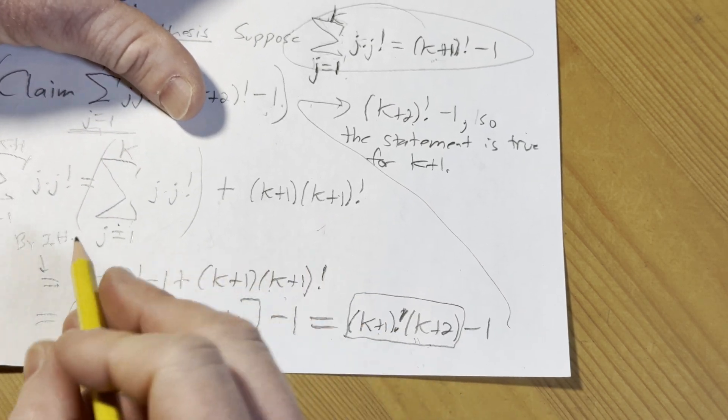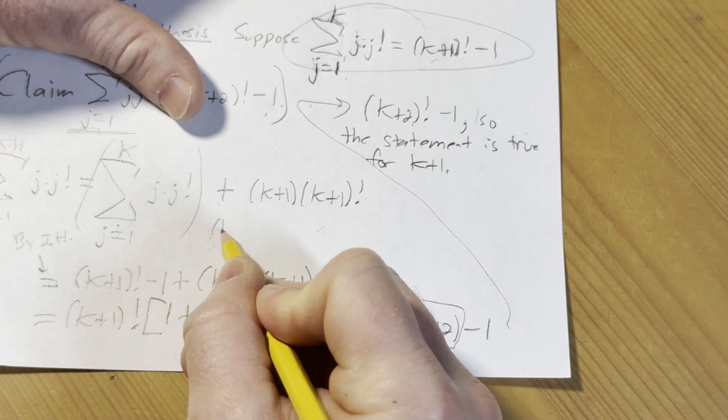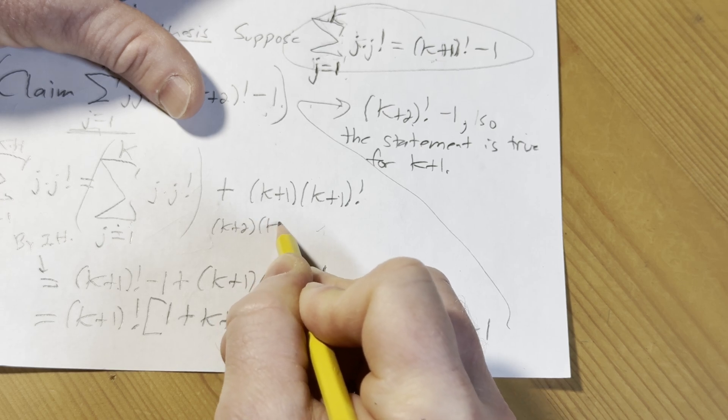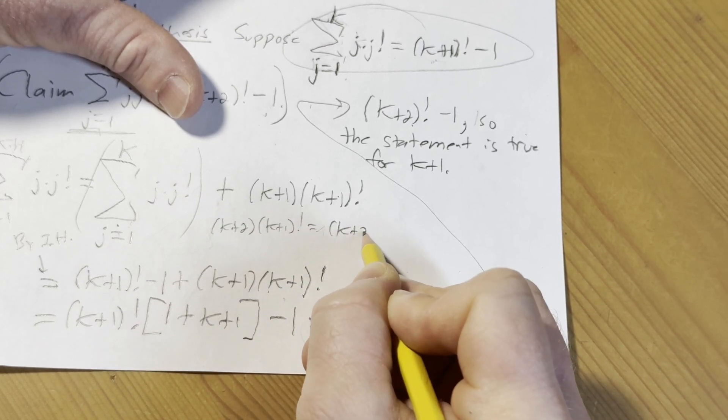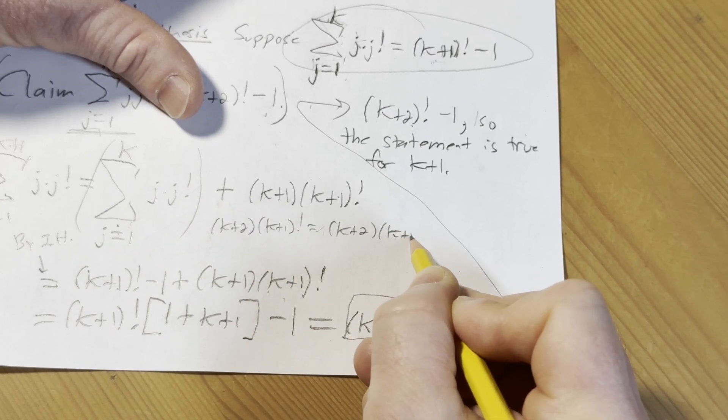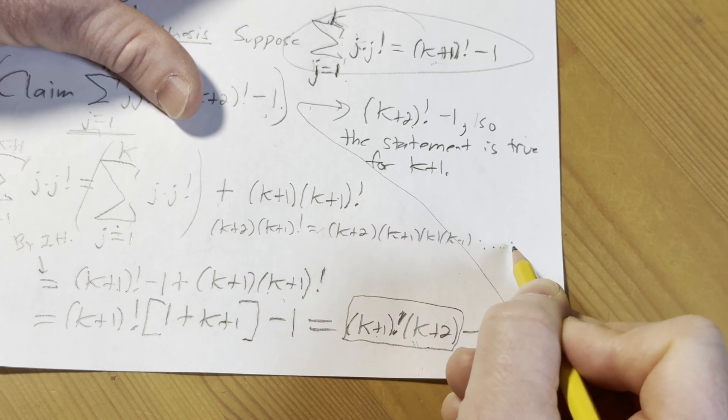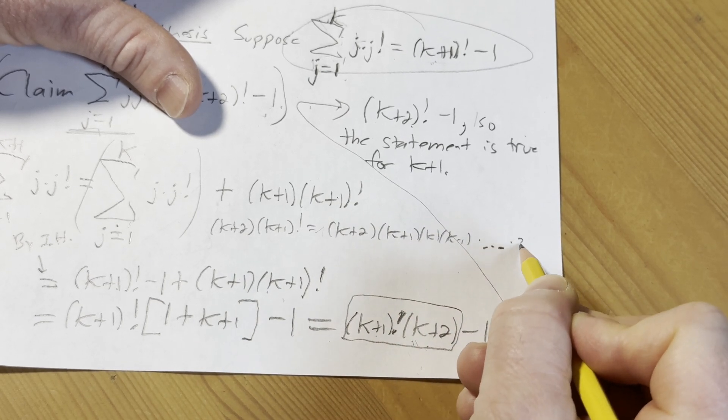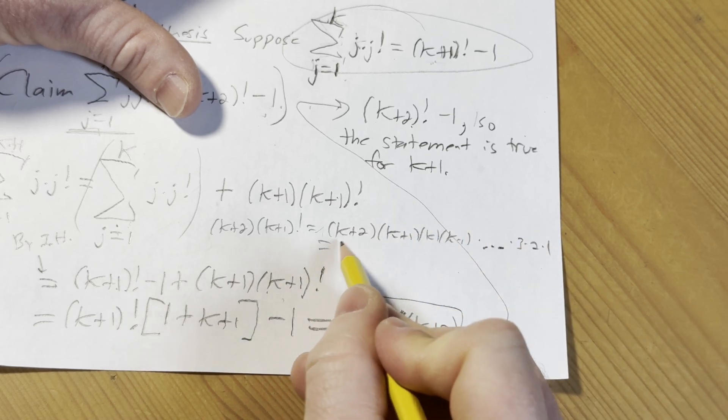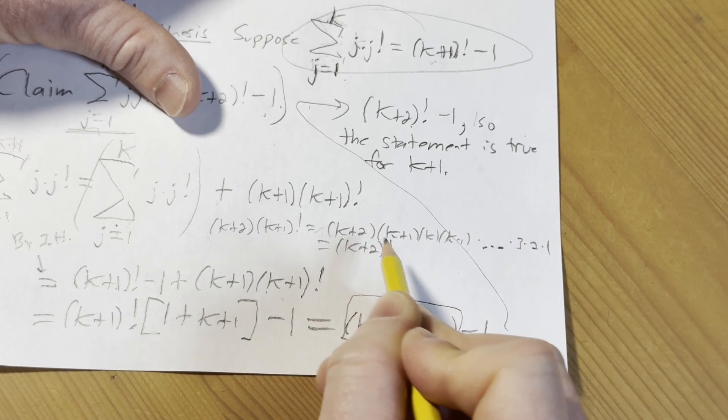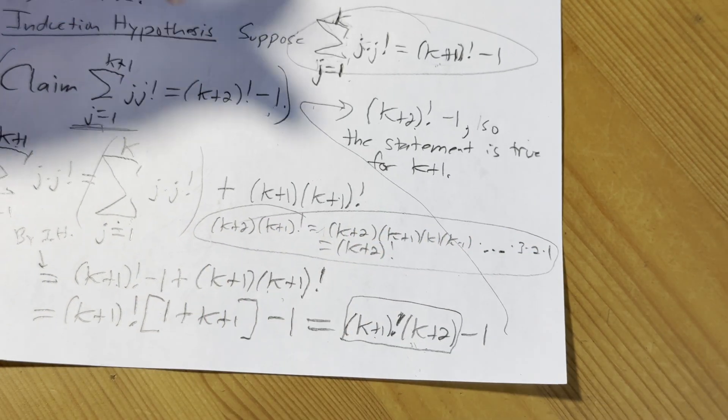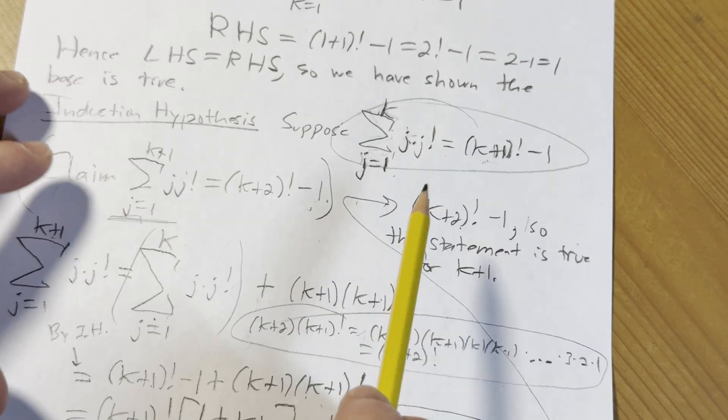So we have k plus 2 times k plus 1 factorial, which is k plus 2. k plus 1 factorial is k plus 1, k, k minus 1, dot, dot, dot, dot, times three dots, not four, three, two, one. This is the definition of k plus 2 factorial. All right, so same thing, right? Same thing. So we assume it's true for k, we show it's true for k plus 1.